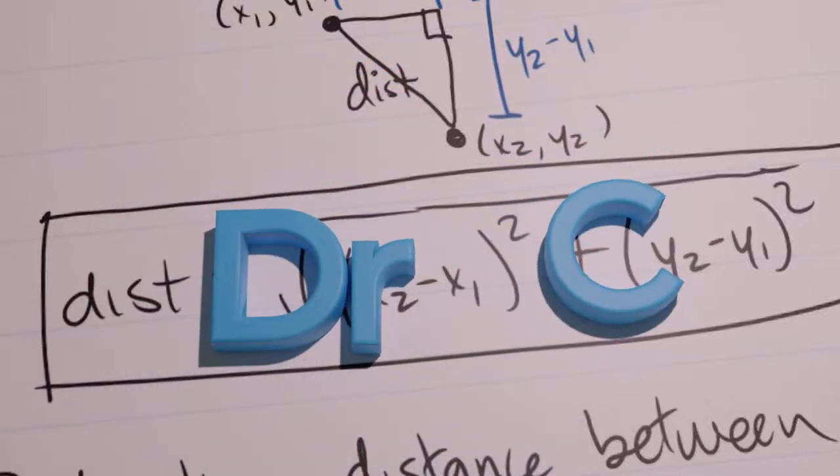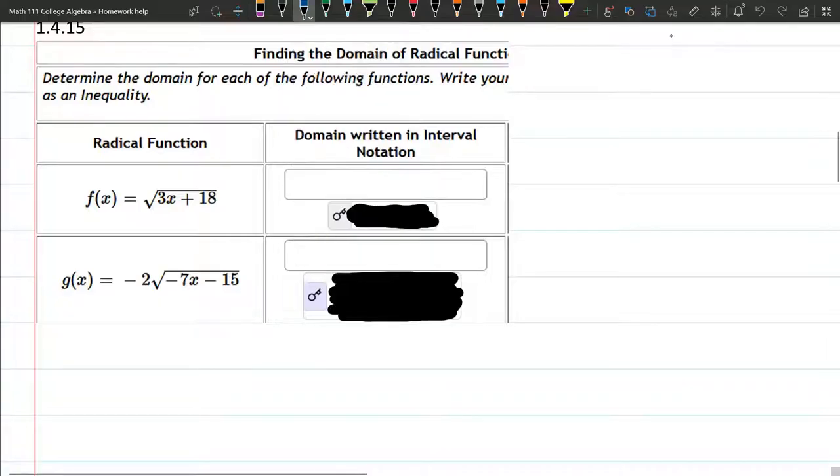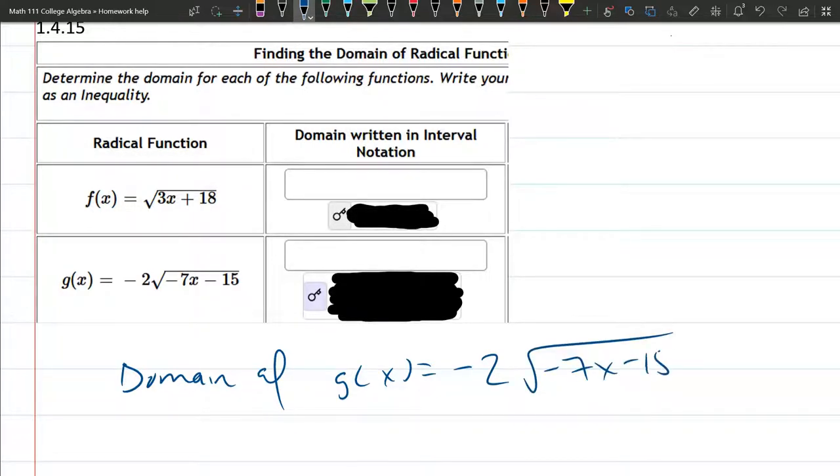This question has two parts and we're going to focus just on the second part. We want to find the domain of g(x) equals negative 2 times the square root of negative 7x minus 15.